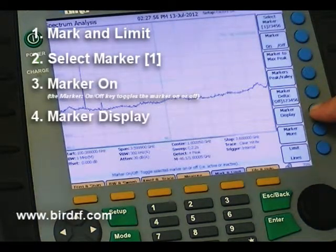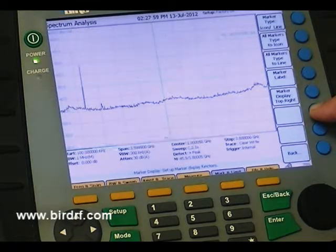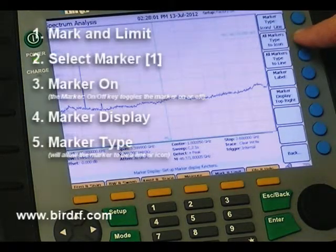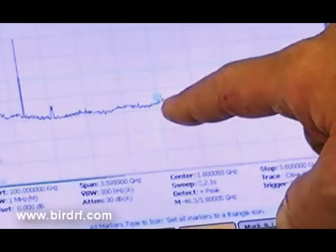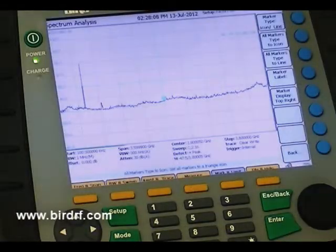When I press Marker Display, it takes me to another menu where I can turn all the markers to type Icon from a line. Now we have an Icon Marker.